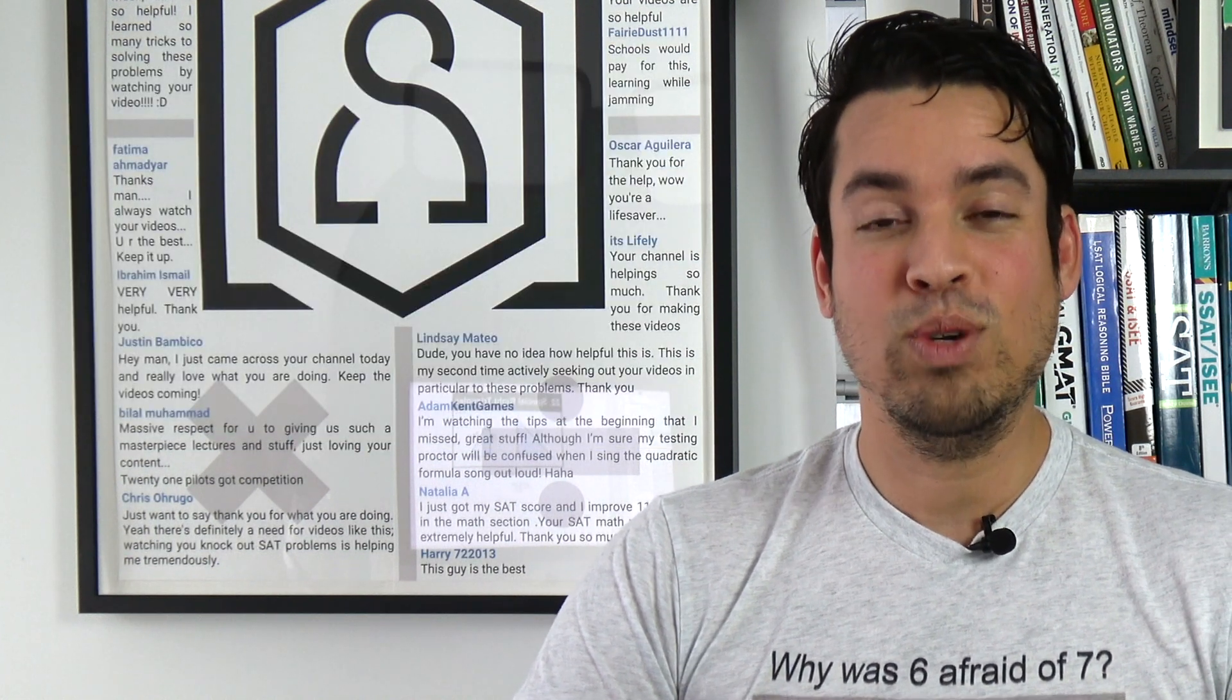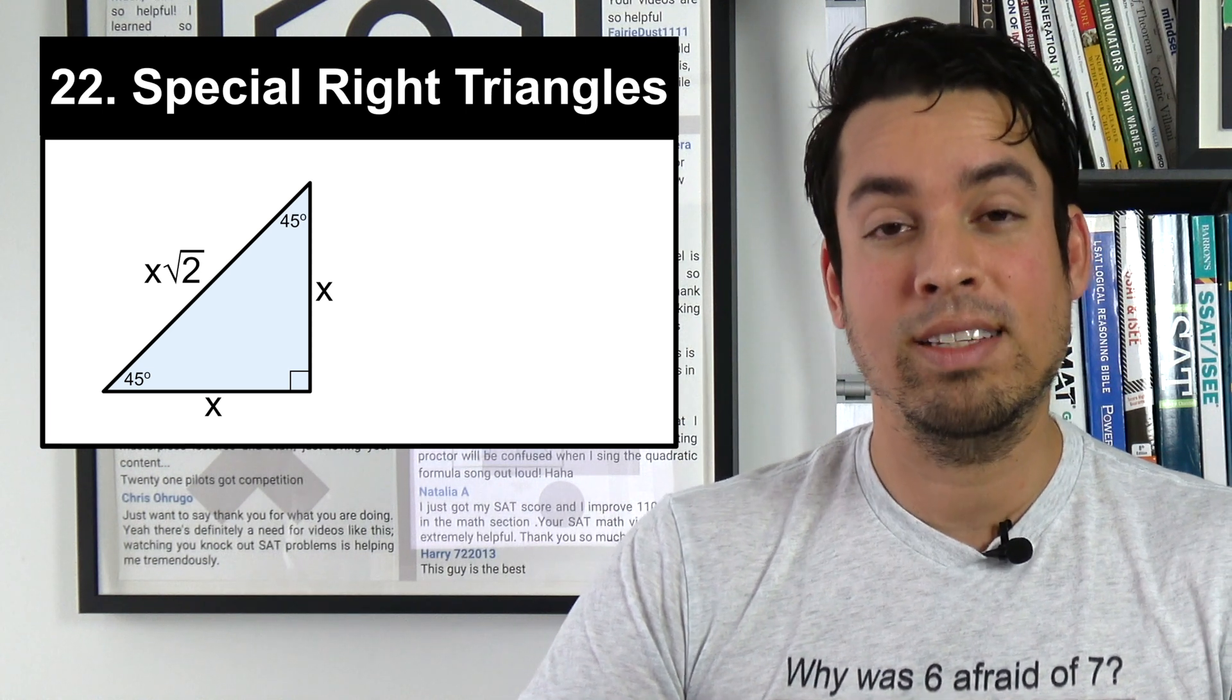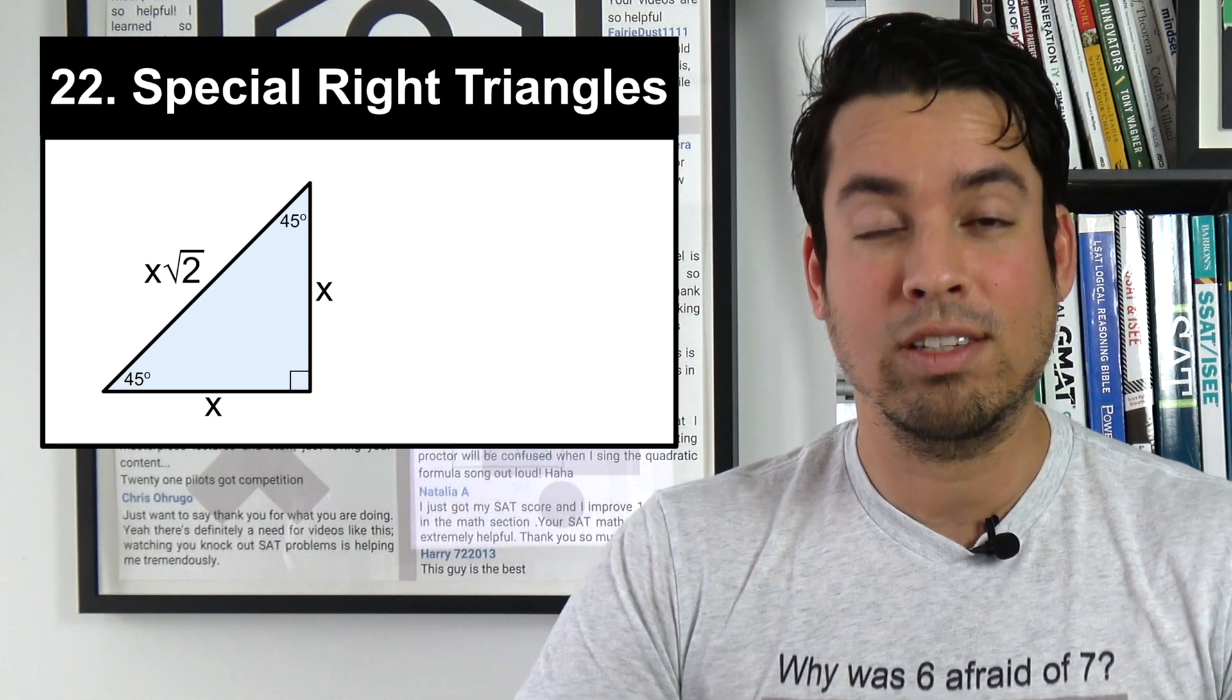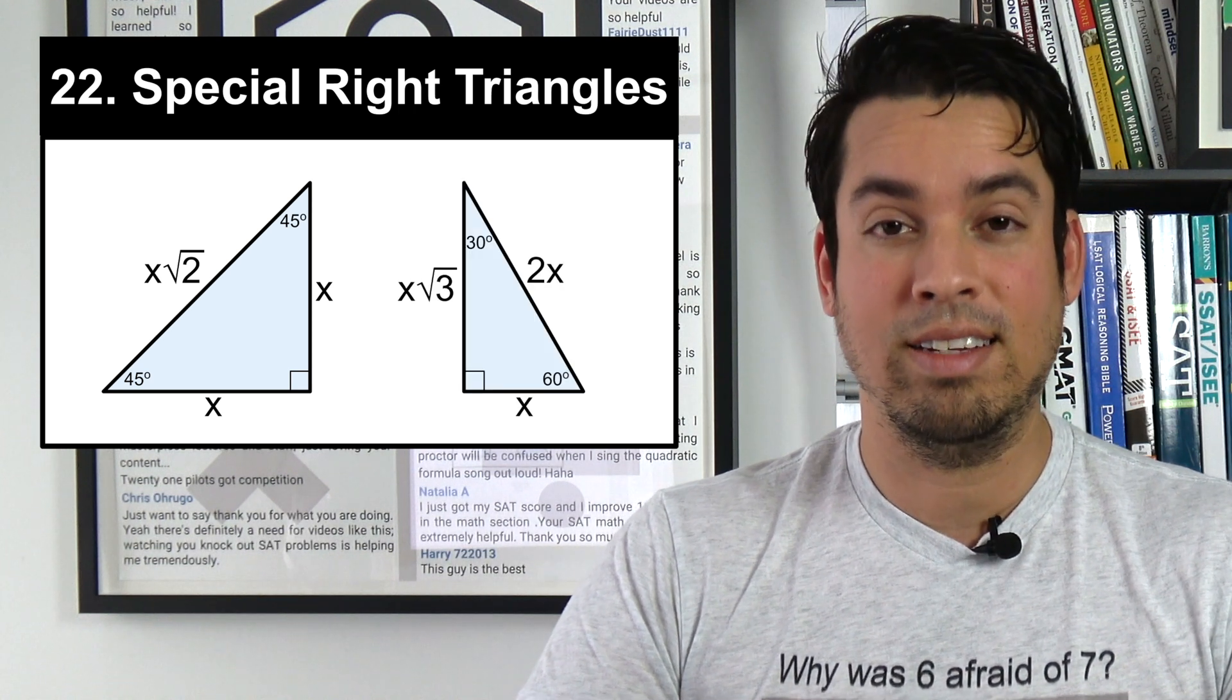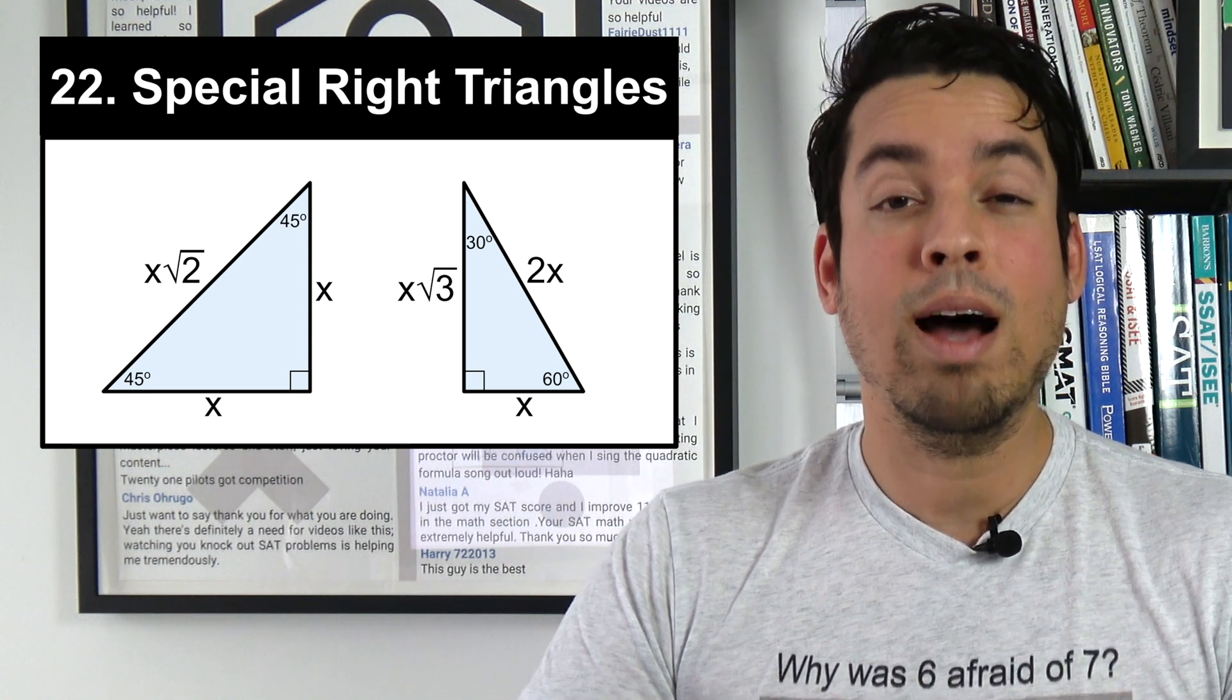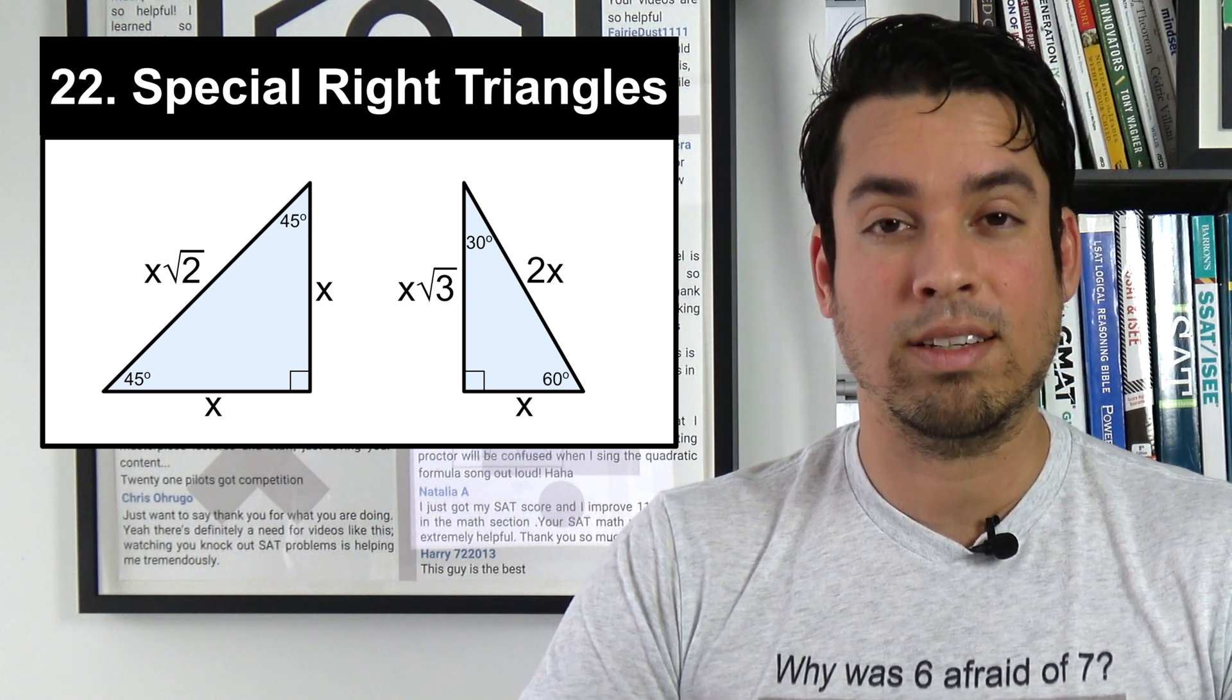Last but not least we have special right triangles, and these are super important to have down. The first one is a 45-45-90, and you can see the ratios of the sides are x, x, and the hypotenuse is x√2. We also have a 30-60-90, and you'll notice here that the side opposite the 30 degree angle is the smallest side, that's our x. The side opposite the 60 is x√3, and of course the hypotenuse is 2x.